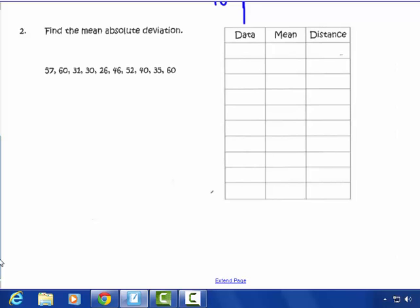Number 2, find the mean absolute deviation. Well, the data, 57, 60, this table isn't showing up very well, 31, 30, 26, 46. I'm putting all my data points in my table first, 52, 40, 35, and my last data point is 60. So I don't have to put them in order. I'm just taking all the data from this list and putting it into the table.